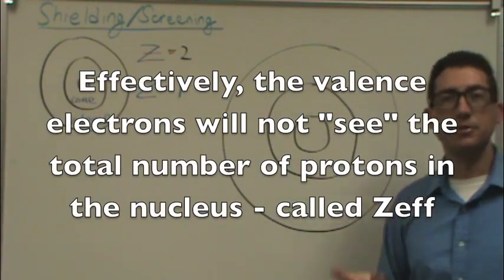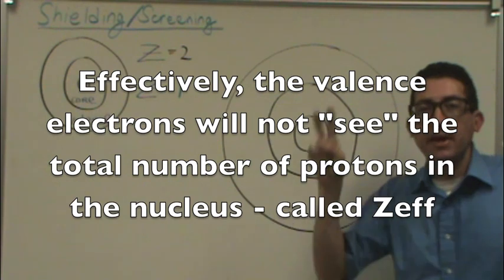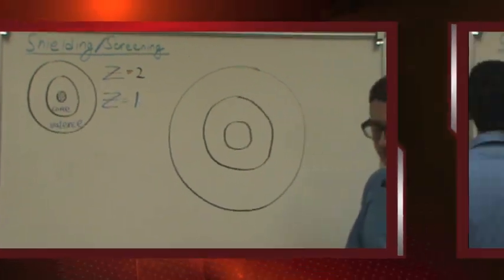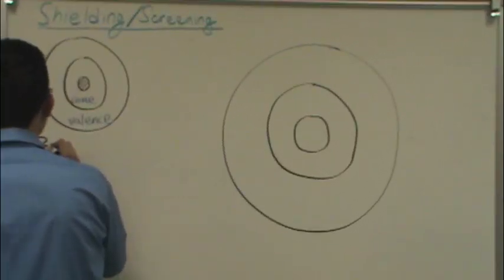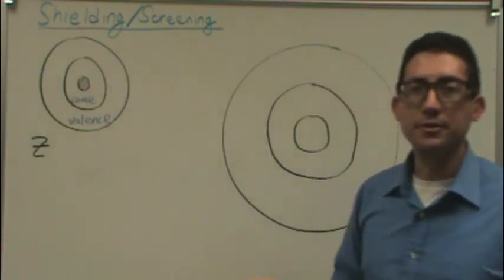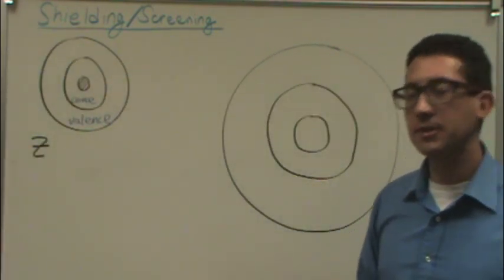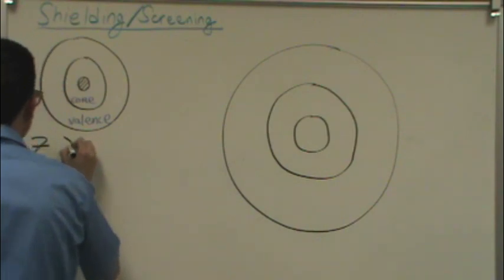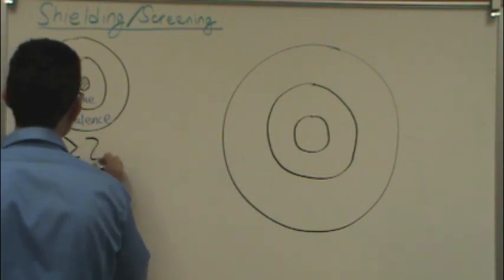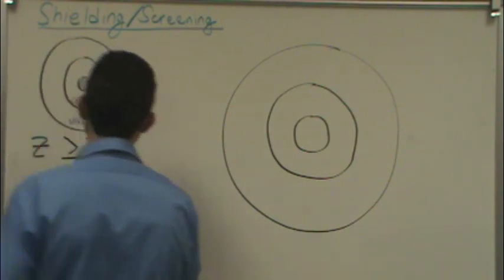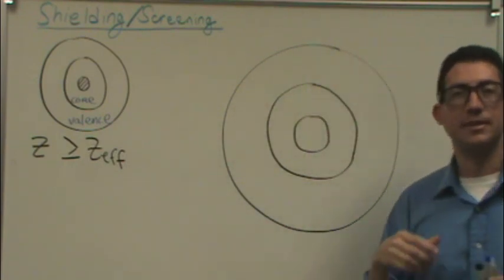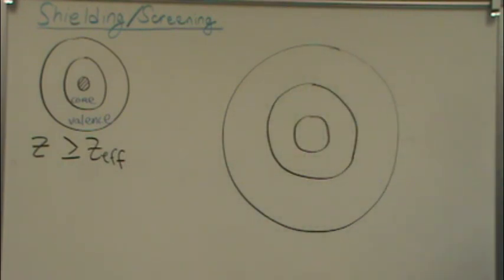So while there's two electrons in the middle, the valence electrons might think that there's only one electron in the middle. So Z, the total nuclear charge, or the number of protons in the nucleus, is always greater than or equal to Z effective. Z effective is the number of protons that the valence electrons effectively see, or see in reality.